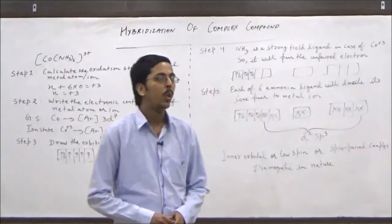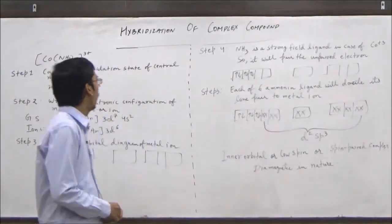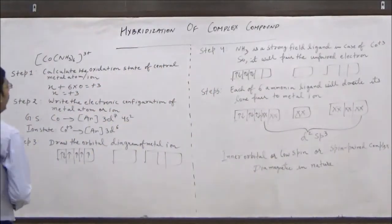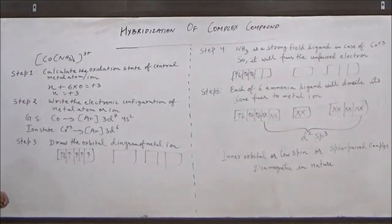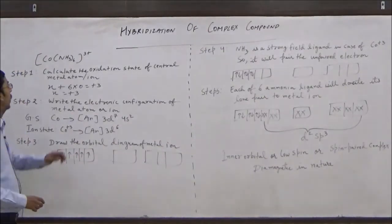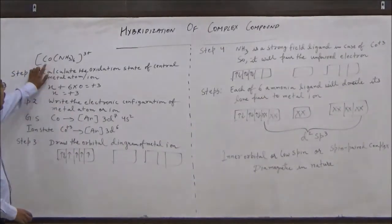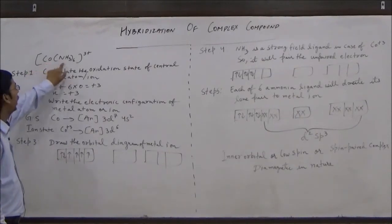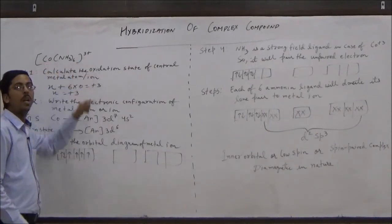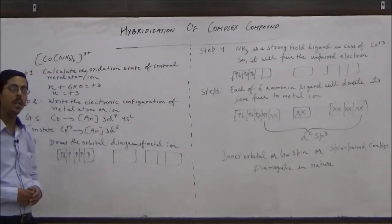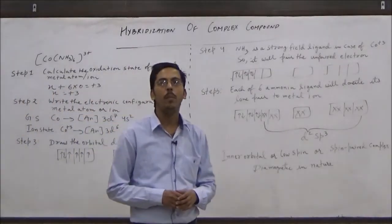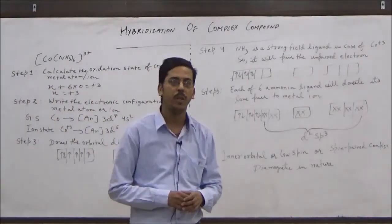Hello all of you. Today we will study how to calculate hybridization of coordination compounds. Suppose we have to calculate the hybridization of complex ion cobalt (NH3)6 with 3+ charge. To calculate the hybridization of any complex ion, we have to follow a few steps.